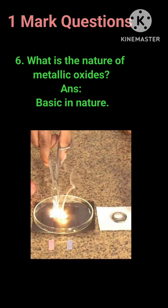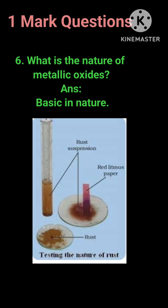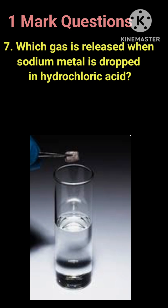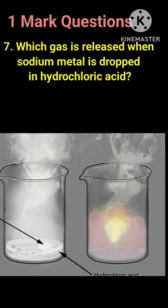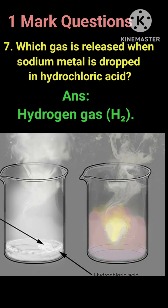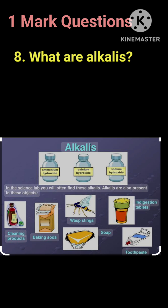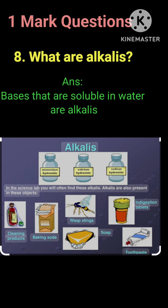Question 6: What is the nature of metallic oxides? Answer: Basic in nature. Question 7: Which gas is released when sodium metal is dropped in hydrochloric acid? Answer: Hydrogen gas (H₂). Question 8: What are alkalis? Answer: Bases that are soluble in water.